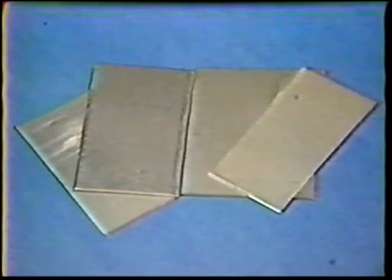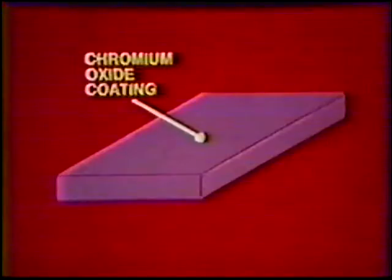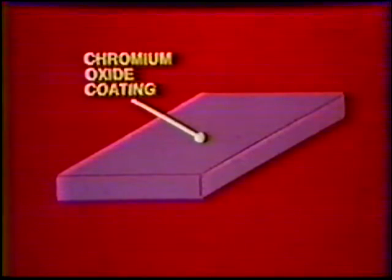Stainless steels are iron-based alloys which have an excellent resistance to corrosion. These steels do not rust and resist attack from most liquids, gases, and chemicals. Stainless steels contain chromium in an amount from 11 to 30 percent, which imparts the corrosion-resistant properties to the metal. When exposed to oxygen in the air, the surface of stainless steel develops a thin film of chromium oxide. This film acts as a further barrier to oxidation, rust, and corrosion.